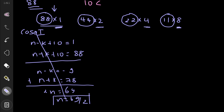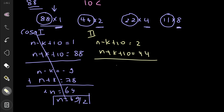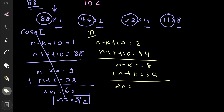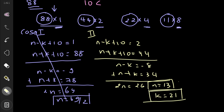Case 2: 44 × 2. We set (n − k + 10) = 2 and (n + k + 10) = 44, giving n − k = −8 and n + k = 34. Adding: 2n = 26, so n = 13. Then k = 13 + 8 = 21. Both n = 13 and k = 21 are positive integers, so (n, k) = (13, 21) is our first valid solution.